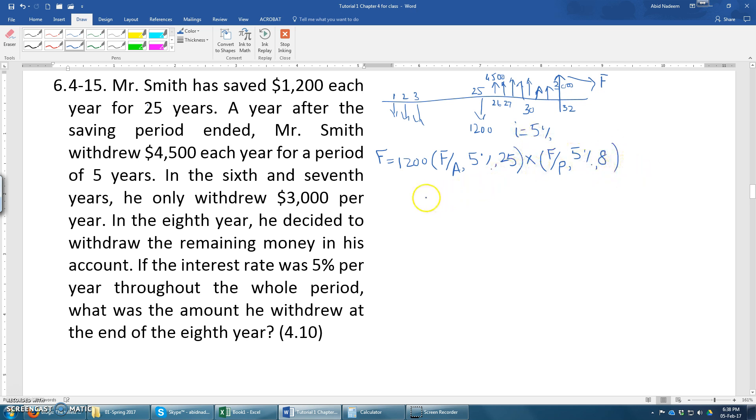Okay, now from this value there will be a subtraction. These were the deposits values, these were the withdrawal values, so they should have the opposite sign. So minus $4,500, this $4,500 was withdrawn for five years.